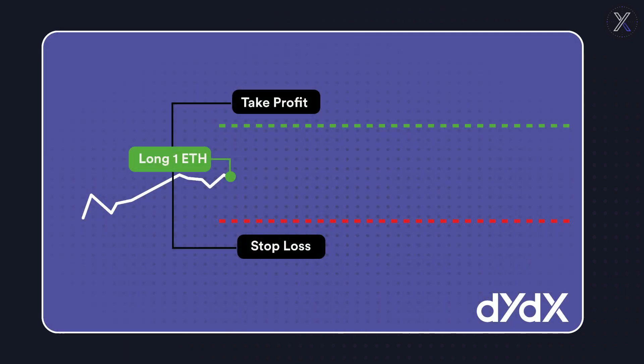Let's look at a simple example. Assume I want to open a long position of 1 ETH, and I've decided on predefined stop loss and take profit trigger levels. With a bracket order, I can accomplish this by placing a single market order.